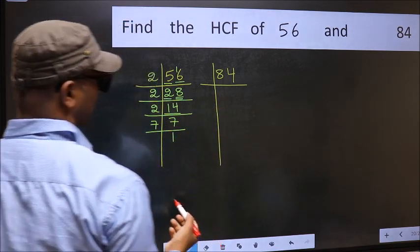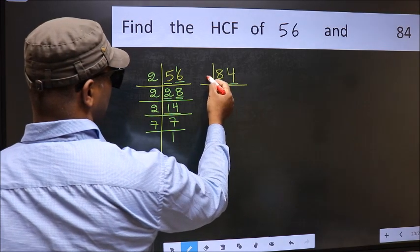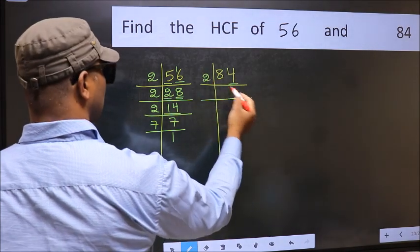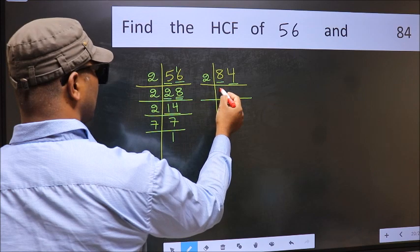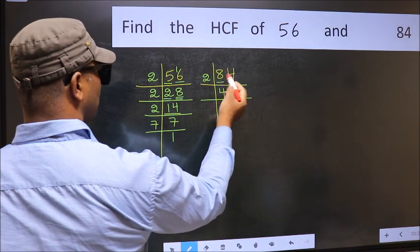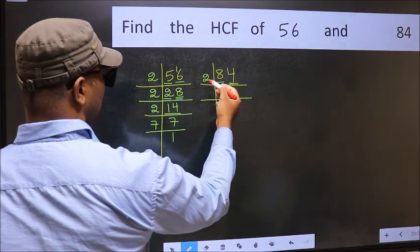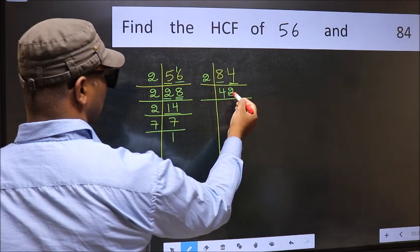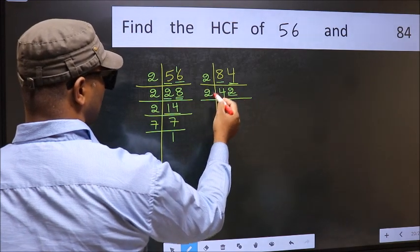Now the other number. Last digit 4, even, so take 2. First number 8, 2 times 4 is 8. The other number 4, 2 times 2 is 4. Now last digit 2, even, so take 2. First number 4, 2 times 2 is 4.